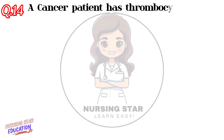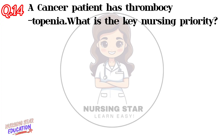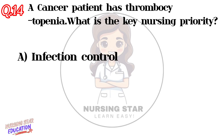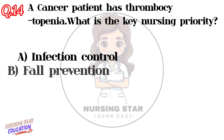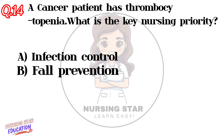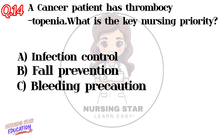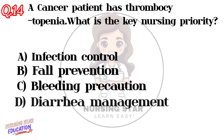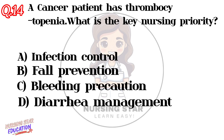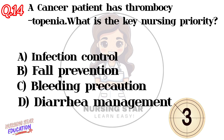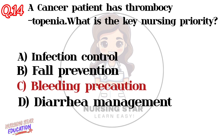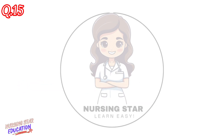Question number fourteen: A cancer patient has thrombocytopenia. What is the key nursing priority? Option A: Infection control. Option B: Fall prevention. Option C: Bleeding precaution. Option D: Diarrhea management. Correct answer: C — Bleeding precaution.